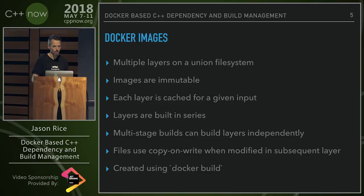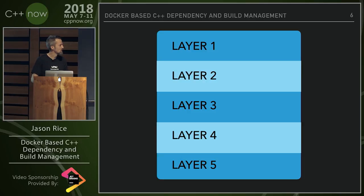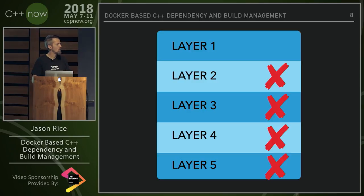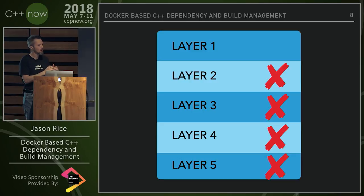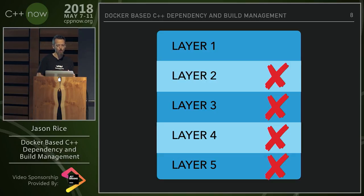So if you made a change to layer two, it would invalidate every layer after that. You can be strategic with how you build your layers — if one has an expensive download, you'd want to put it in a separate layer. And if the order didn't matter, you'd want to put it in one of the higher layers, so that if something changes a lot, it wouldn't invalidate the layer with the expensive operation.